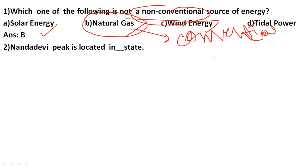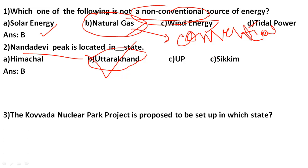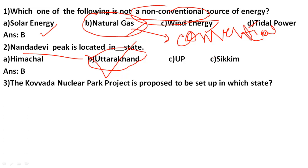Next: Nanda Devi peak is located in which state? Nanda Devi peak is located in Uttarakhand. Option number B, Uttarakhand, is correct.